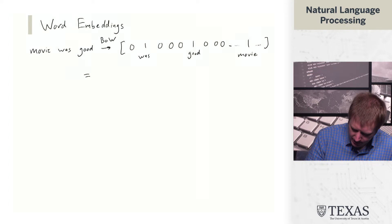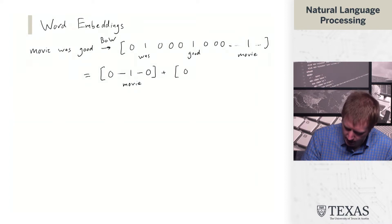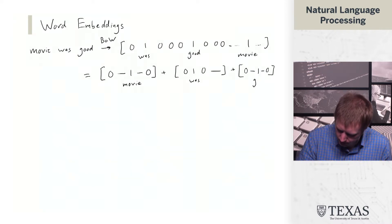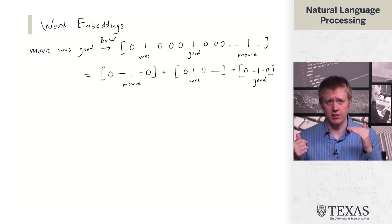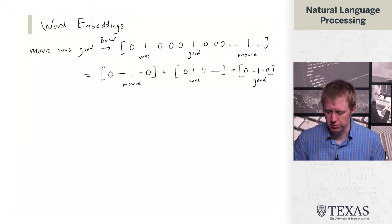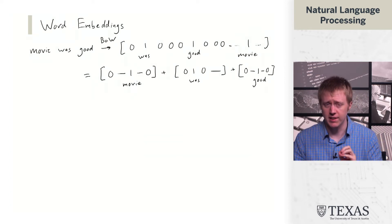One way to think about this is that it is the sum of three vectors, each of which has a single one in it summed together, and that gives our bag-of-words representation that has three ones in it. This is a way of thinking about going from a word-level representation to a sentence-level representation.